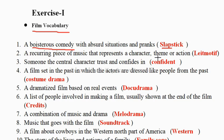Next: a reoccurring piece of music that represents a character, theme, or action. Usually in movies, if the protagonist is coming or a villain like Thangavali is coming, there is a specific music associated with them. That music which represents a character, theme, or action is called leitmotif.